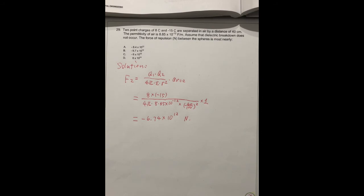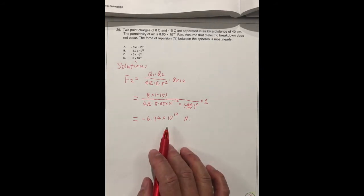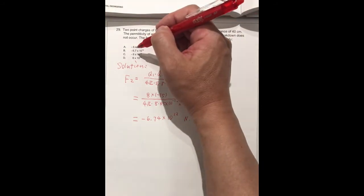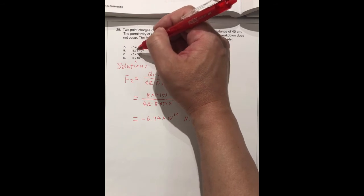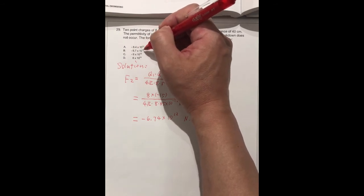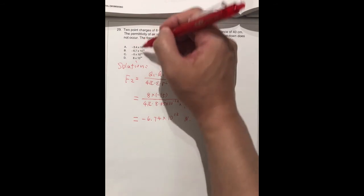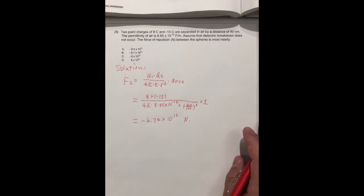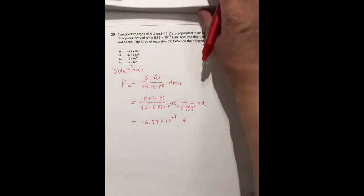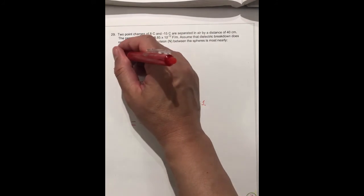The correct answer should be B. The best answer should be B, which is minus 6.7 times 10 to the 12.